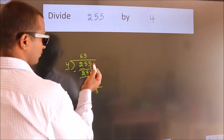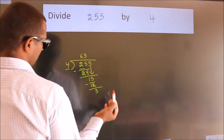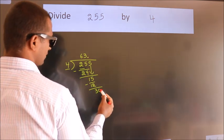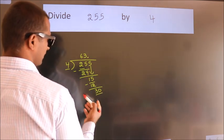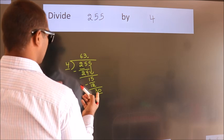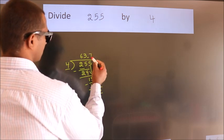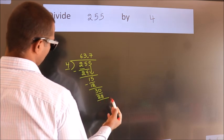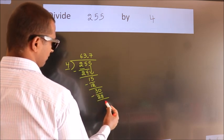After this, no more numbers to bring it down. So what we do is we put a dot and take 0, so 30. A number close to 30 in the 4 table is 4 times 7 equals 28. Now we subtract. We get 2.